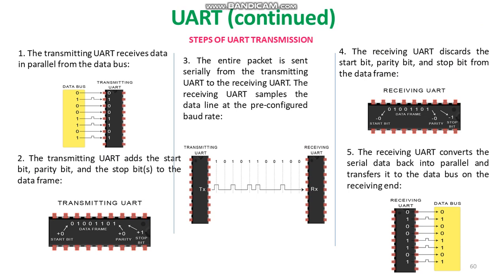Third, the entire packet is sent serially from the transmitting UART to the receiving UART. The receiving UART samples the data line at the pre-configured baud rate. Fourth, the receiving UART discards the start bit, parity bit, and the stop bit from the data frame. Fifth, the receiving UART converts the serial data back into parallel and transfers it to the data bus on the receiving end.